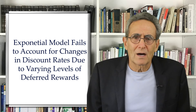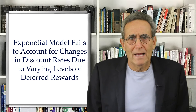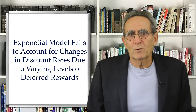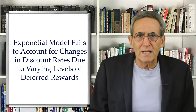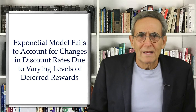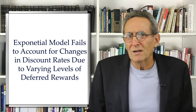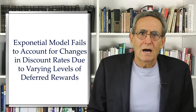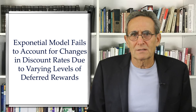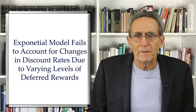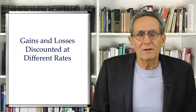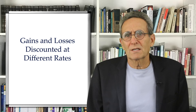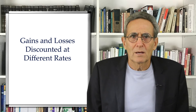The model also implies that the amount of dollars or cookies involved should not impact the rate of discounting. If I am indifferent between receiving $10 today and $12 a year from now, this implies a discount rate of 20%. But studies have shown that if the amounts of dollars involved are much higher, the rate of discounting goes down. In other words, I might also be indifferent between receiving $100 today and $110 a year from now — that's a discount rate of only 10%. Yet another anomaly is the discovery that gains and losses are discounted at different rates; specifically, losses are discounted at a lower rate than gains.